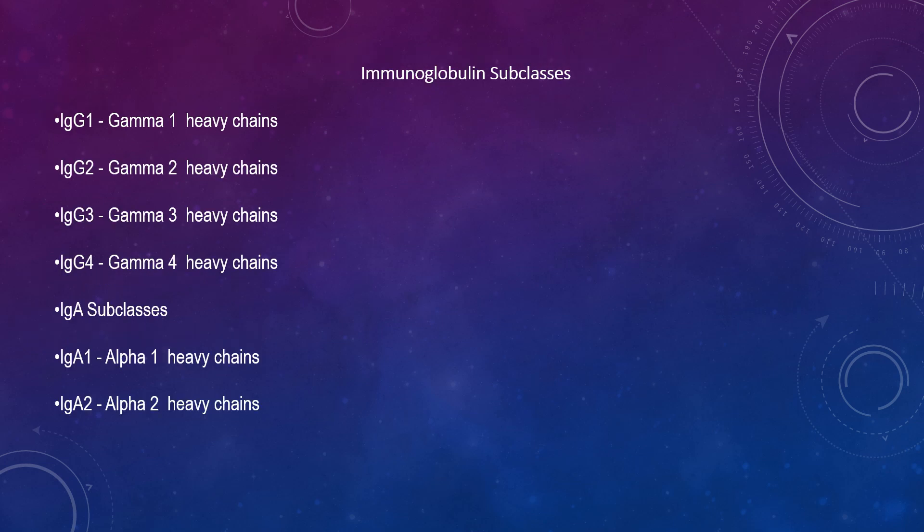The classes of immunoglobulins can be divided into subclasses as well, based on small differences in amino acid sequences in the constant region of heavy chains. All immunoglobulins of a subclass are very similar in heavy chain constant region amino acid sequences. These differences are most commonly detected by serological means. Subclasses include IgG1, IgG2, IgG3, IgG4, and IgA1, IgA2, etc.